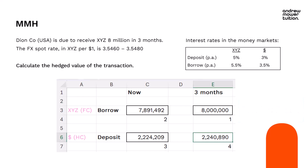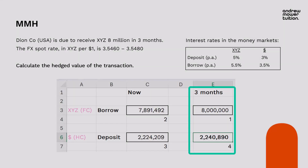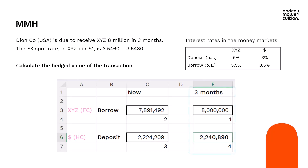That gives us our answer: approximately 2,240 — the total amount we are going to receive in dollars. It doesn't matter what the exchange rate is in three months' time, since there's no link between box one and box four. We've agreed a rate today for both the borrow and the deposit, and we know the spot rate today, so we're all good. That's our final hedged value: 2,240.